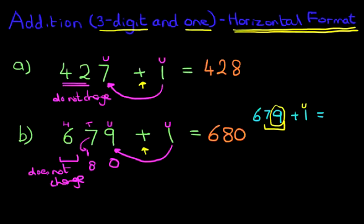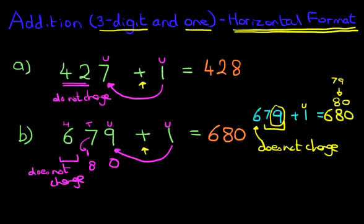So if it is 79, what number comes after 79? Don't forget we're only adding 1. The number after it is 80. The 600s over here does not change. So therefore the answer becomes 680, which is the same answer we had over here.